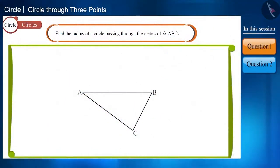Let's start with our first question. Friends, here we have a triangle ABC. Can you find the radius of a circle passing through its vertex points?